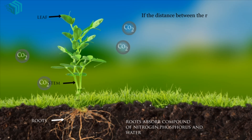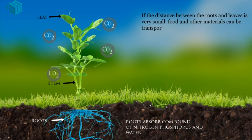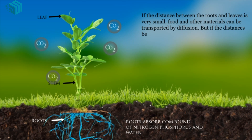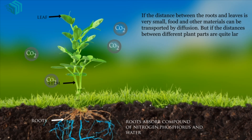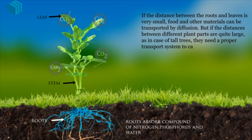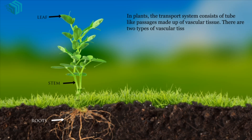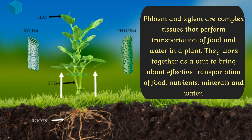If the distance between the roots and leaves is very small, food and other materials can be transported by diffusion. If the distance between different plant parts is quite large, as in the case of tall trees, they need a proper transport system to carry mineral nutrients and water from one part to another. In plants, the transport system consists of tube-like passages made up of vascular tissues. There are two types of vascular tissues in plants: xylem and phloem. Phloem and xylem are complex tissues that perform transportation of food and water in a plant.